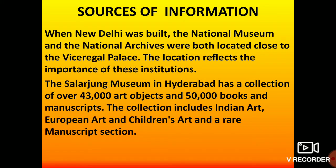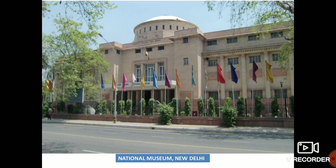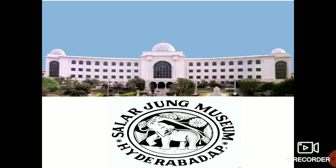The Salar Jung Museum in Hyderabad has a collection of 43,000 art objects and 50,000 books and manuscripts. A manuscript is writing done with the help of a palm leaf, parchment — meaning animal skin — or the bark of a tree; 'manu' means hand. The collection includes Indian art, European art, children's art, and a rare manuscript section.